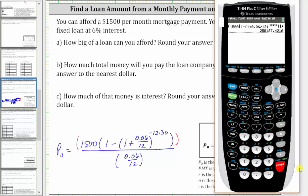And Enter. We'll round to the nearest dollar, and therefore the biggest loan you can afford is $250,187.